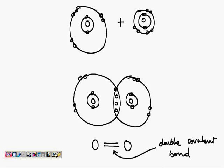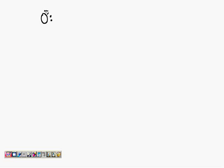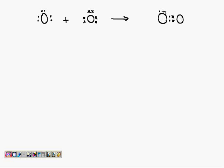Now I will show this in terms of electron dot structure on the next page. In the electron dot structure, we show only the outermost orbit. For the first oxygen atom: 1, 2, 3, 4, 5, 6 electrons shown as dots. The second oxygen atom is shown using crosses: 1, 2, 3, 4, 5, 6. Both combine, and the shared electrons are shown in the middle — 1, 2, 3, 4. This is the electron dot structure.